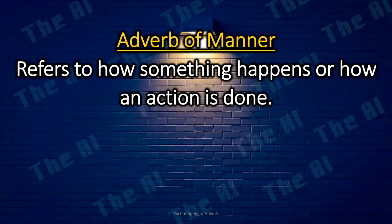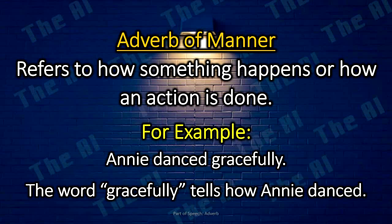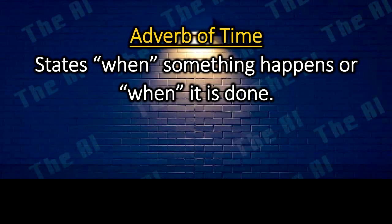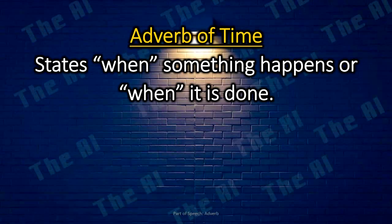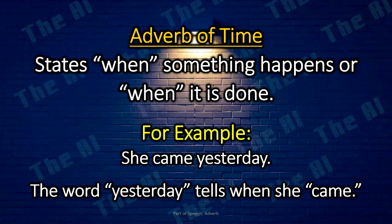Adverb of manner. Adverb of manner refers to how something happens or how an action is done. For example: Annie danced gracefully. The word gracefully tells how Annie danced. Adverb of time. The adverb of time states when something happens or when it is done. For example: She came yesterday. The word yesterday tells when she came.